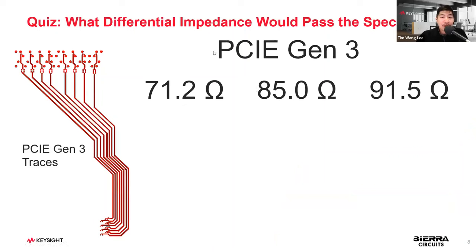Before we discuss how to fix unexpected differential impedance, I want you to think about PCIe Gen 3. There are three choices — which impedance would pass the spec: 71.2, 85, or 91.5 ohms? Have an idea in mind.